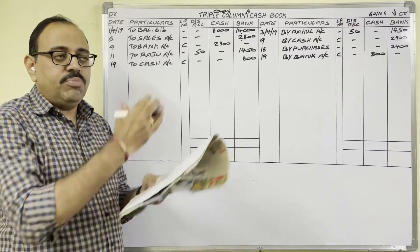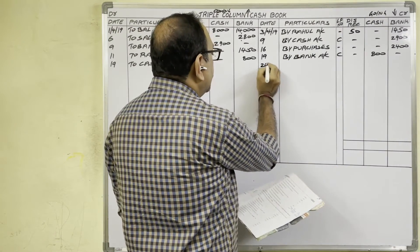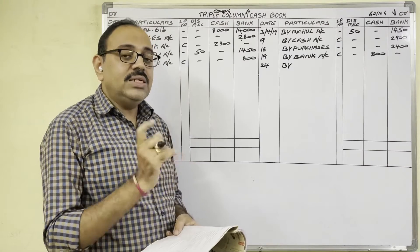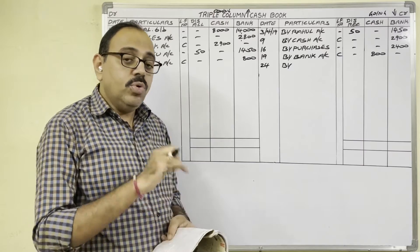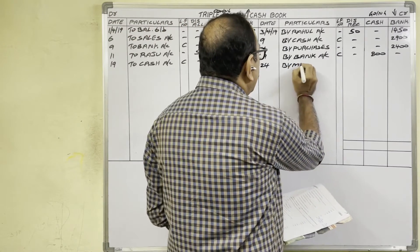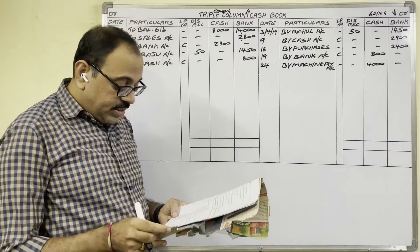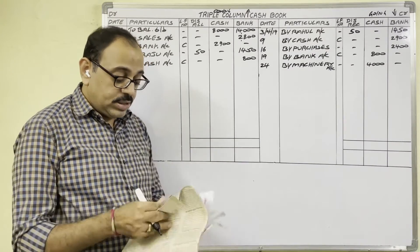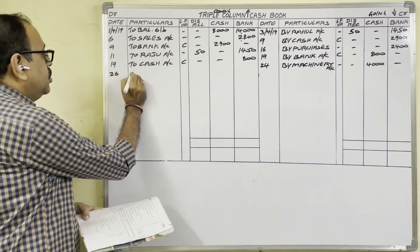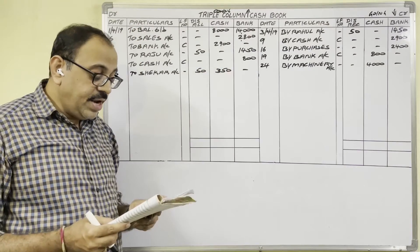24th April: Purchased machinery — 4,000 rupees. The supplier's name is not given, meaning we purchased for cash. Machinery is coming in and cash is going out, so on the credit side we write: 24th date, By Machinery Account, 4,000 rupees in the cash column. Note: if a fixed asset is purchased, we write the asset name (By Machinery Account); if goods are purchased, we write By Purchases Account. 26th April: Received cash from Shaker — 350 rupees; discount allowed 50 rupees. Cash is coming in — debit side: To Shaker Account, 350 in cash column, 50 in discount allowed column.